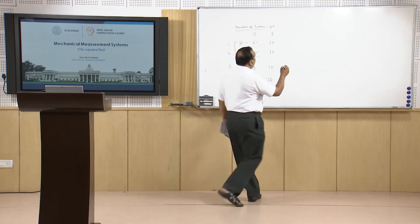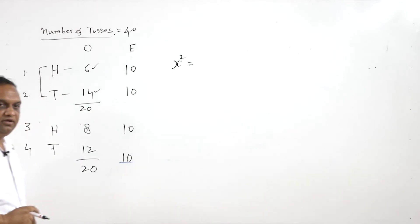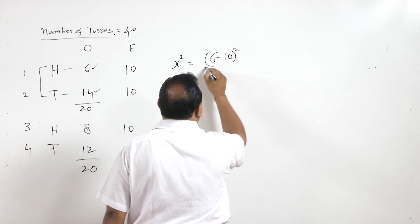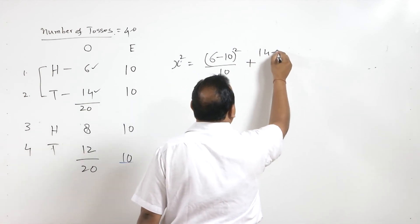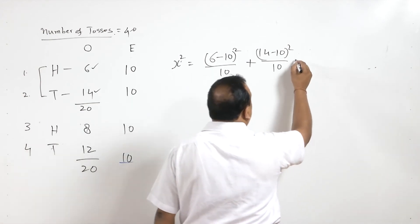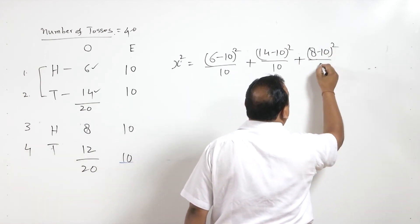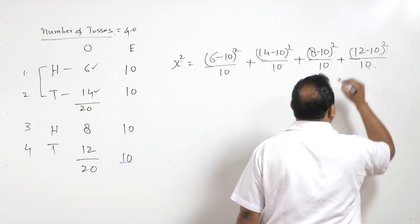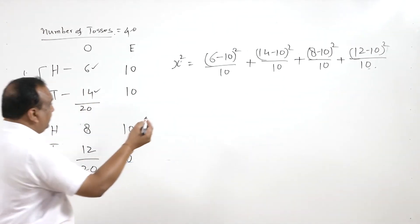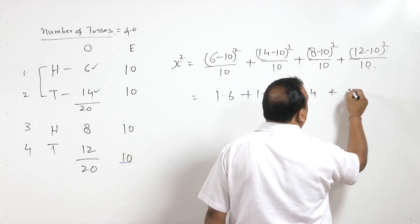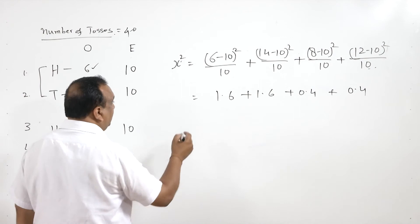We calculate chi-square for the combined data: (6−10)²/10 + (14−10)²/10 + (8−10)²/10 + (12−10)²/10 = 1.6 + 1.6 + 0.4 + 0.4 = 4.0.